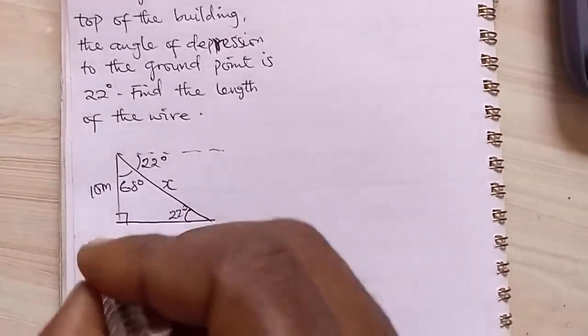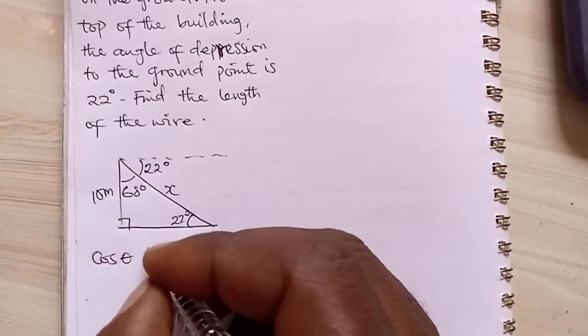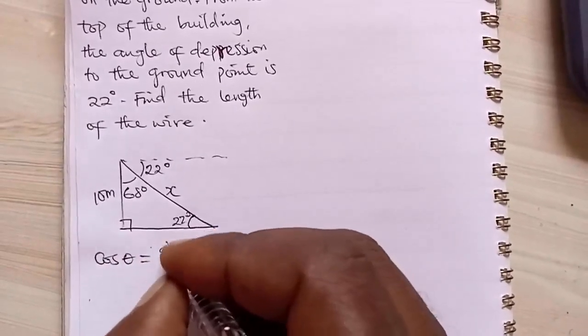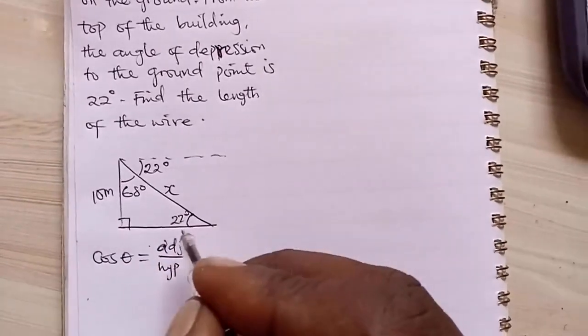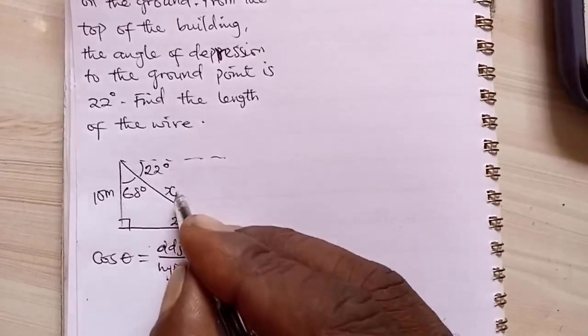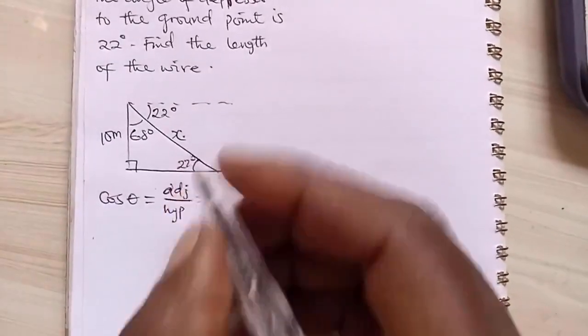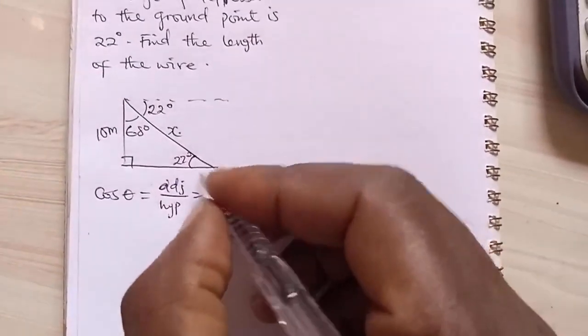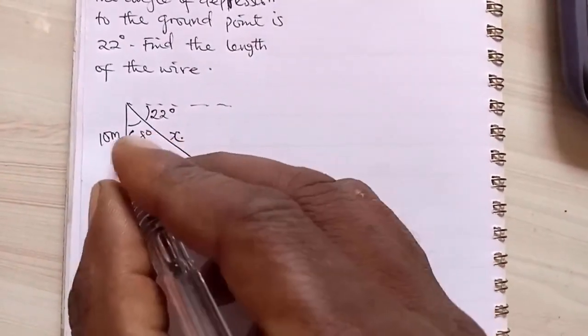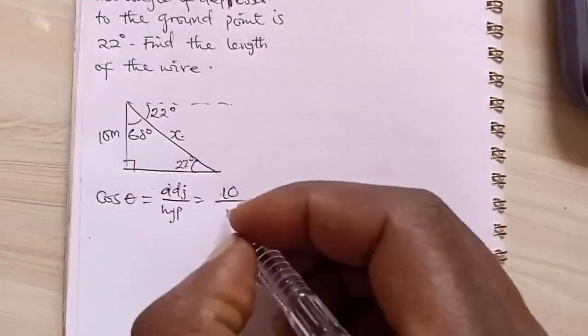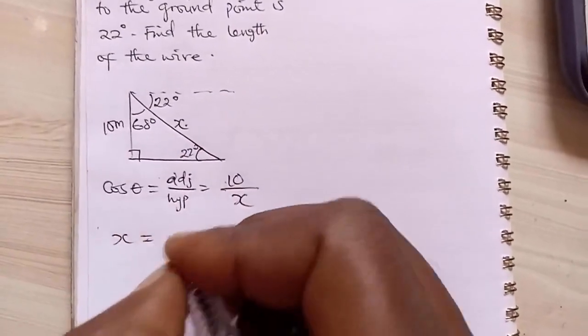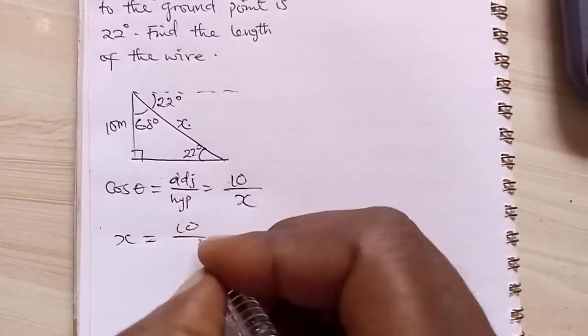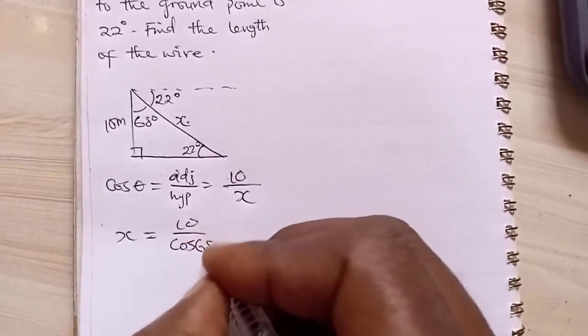Now we can use the cos function. Cos is adjacent over hypotenuse. The adjacent of the angle, this is hypotenuse. So we have that X can be given as, this is 10, adjacent of this angle is 10 over hypotenuse X. So we can make X subject of the formula. X becomes equal to 10 over cos 68 degrees.